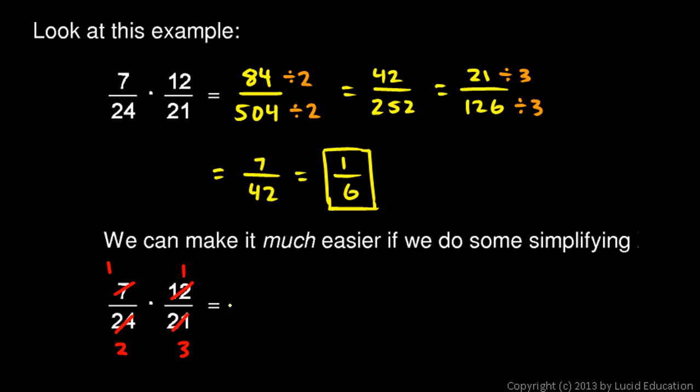And this 7 and this 21 will reduce to a 1 and a 3. And look at that. Now just multiply the numerators. 1 times 1 is 1. And multiply the denominators right here. 2 times 3 gives you 6. Look at that. Same answer, of course.